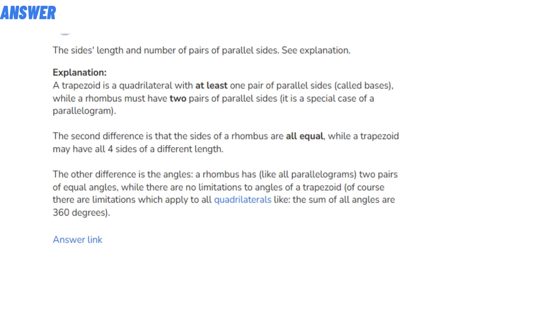while a rhombus must have two pairs of parallel sides. It is a special case of a parallelogram. The second difference is that the sides of a rhombus are all equal, while a trapezoid may have all four sides of different lengths.